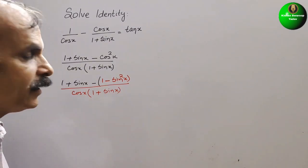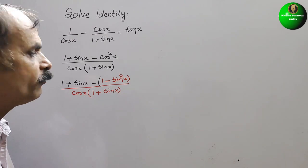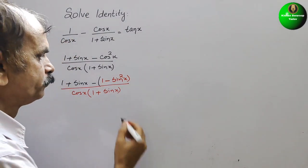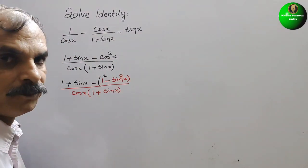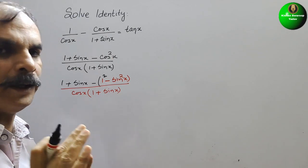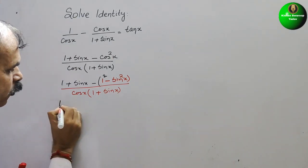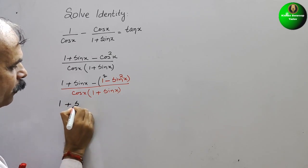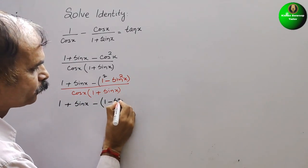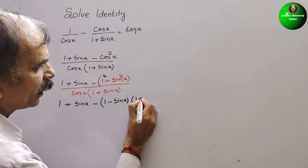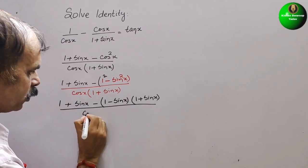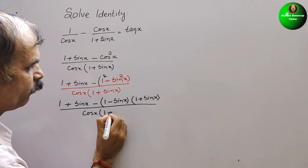We will convert cos²x into 1 - sin²x. Now we write 1 + sin x minus (1 - sin²x), where 1 - sin²x is in the form a² - b², which factors as (1 - sin x)(1 + sin x).